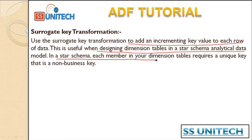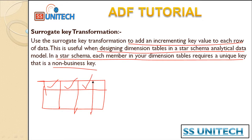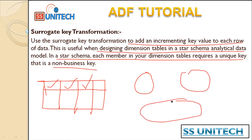In star schema, each of your dimension tables requires a unique key that is the non-business key. So, basically we will have one raw data source keeping information for the employee — employee data, address data, and date data. Instead of keeping all those together, we can split that: date data in one table, address data in one table, and employee data in one table. All those tables require a unique row identifier, so for that we can use the surrogate key.